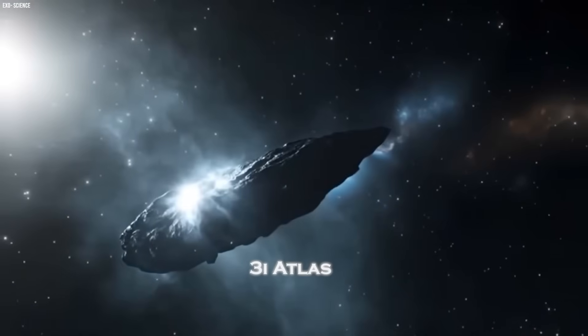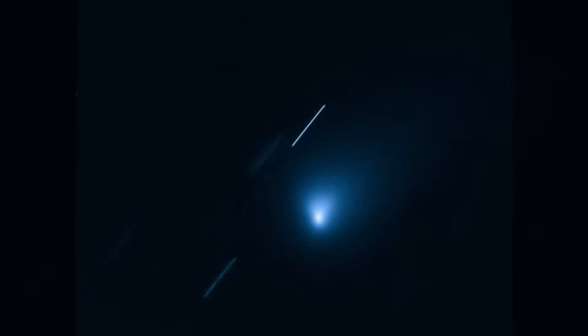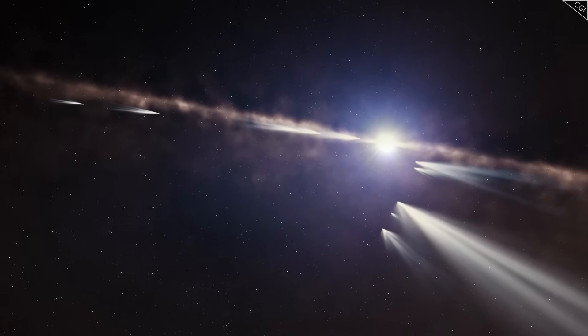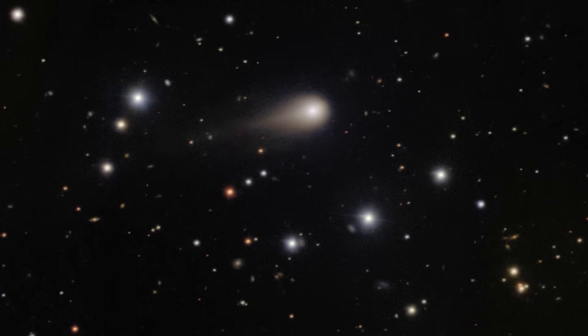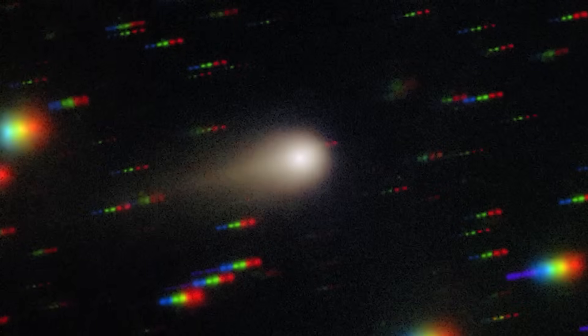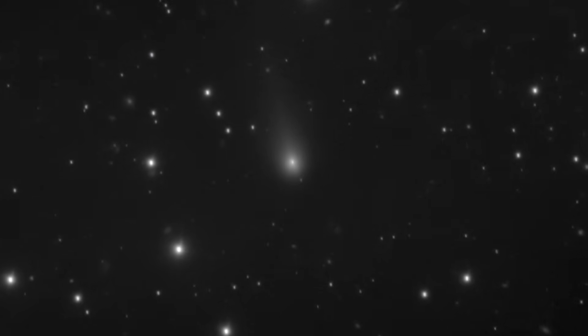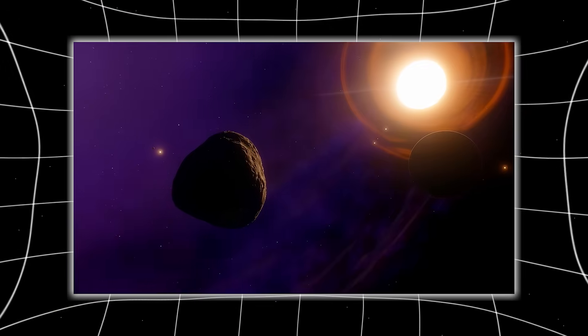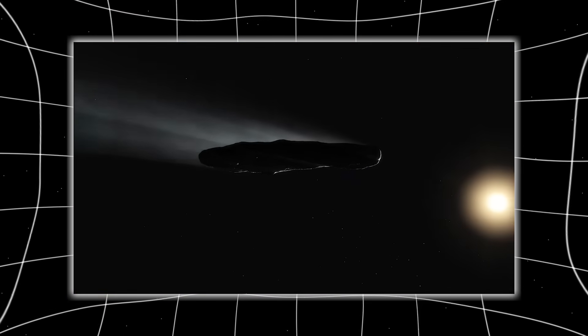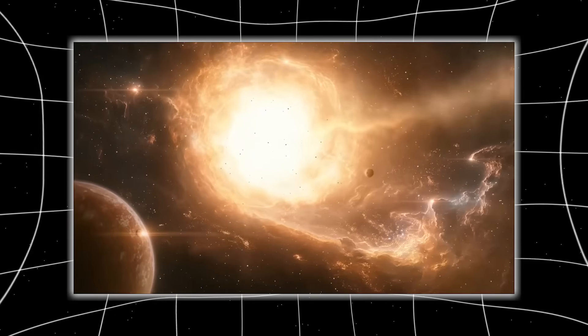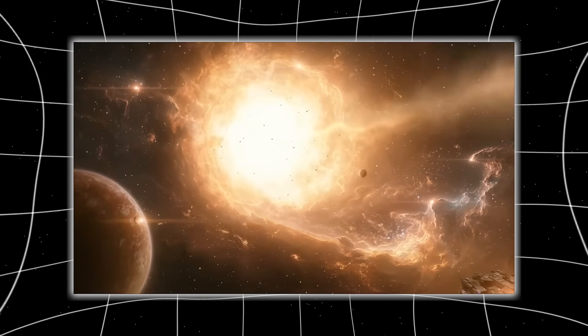Among all the anomalies surrounding 3i Atlas, the anti-tail remains the most shocking because unlike typical comet tails, which always point away from the sun due to solar wind, this one is a needle-like jet pointing toward the sun for at least one million kilometers. And unlike classic optical illusions that produce temporary anti-tails only when Earth crosses a comet's orbital path, this object's anti-tail cannot be a trick of perspective. The document makes it clear, Earth never crosses 3i Atlas's orbital plane. That means this structure is real, physical, and violently contradicts our understanding of solar wind interactions.